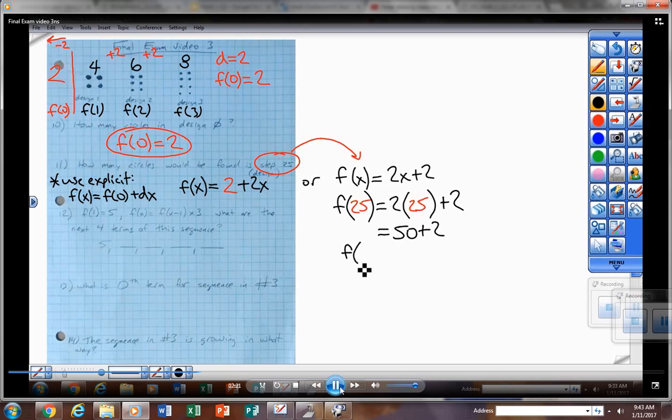Order of operations says do the multiplying first, so I'm going to multiply those and then I'm going to add 2 second. So at the 25th term there will be 52 circles. And again, you would not want to use the recursive form to go all the way out to the 25th step. You want to skip straight ahead, use explicit.